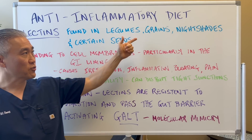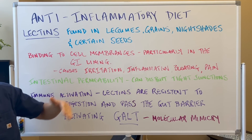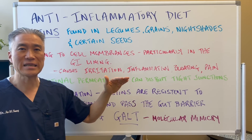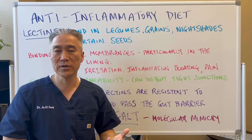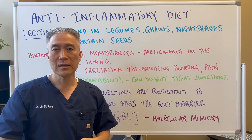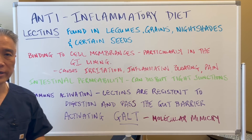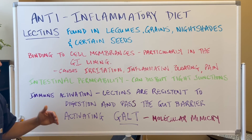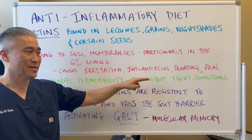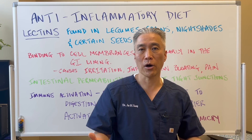Lectins are found in legumes, grains, nightshades, and certain seeds. Lectins have the ability to bind to cell membranes, in particular the GI lining or the gut lining. It causes irritation, inflammation, bloating, and pain in some individuals. It doesn't impact everyone, but especially those who are susceptible — like if you have autoimmune disease, underlying GI issues, or have had a lot of antibiotic therapy. Intestinal permeability can also occur, or what we call leaky gut. It can disrupt the tight junctions of the gut, allowing larger food proteins to cross into the bloodstream and cause inflammation.